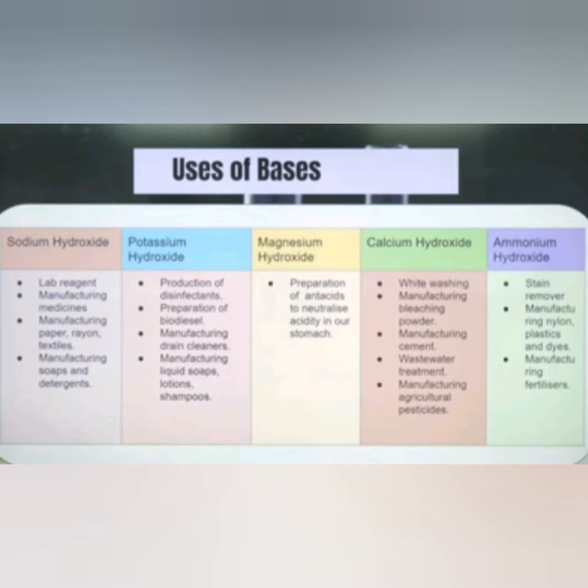Sodium hydroxide is used as a lab reagent, and it is used in manufacturing medicines, paper, rayon, and textiles. It is also used in soaps and detergents. Potassium hydroxide is used in the production of disinfectants, preparation of biodiesel, manufacturing of drain cleaners, and it is also used in manufacturing liquid soaps, lotions, and shampoos.